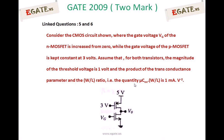Assume that for both transistors, the magnitude of threshold voltage is 1V, and the product of transconductance parameter and W/L ratio, i.e., the quantity mu_Cox into W/L, is 1 mA per volt squared.